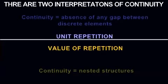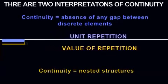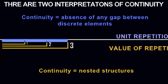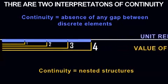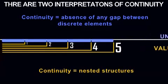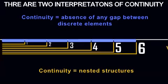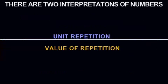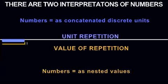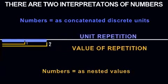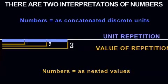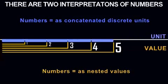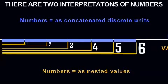There are also two interpretations of continuity. In one interpretation, continuity is the absence of any gap between discrete elements. In another interpretation, continuity involves nested structures. In addition, there are two interpretations of numbers: numbers as concatenated discrete units, or numbers as nested values.